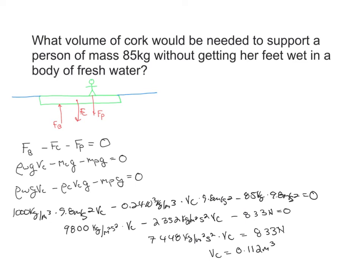In this video, we're going to look at the example: what volume of cork would be needed to support a person of mass 85 kilograms without getting her feet wet in a fresh body of water? We have a situation where a piece of cork is essentially being used as a raft. We have a person standing on it, and we want to know what volume we need so that the water level never gets above the raft — essentially the extreme where the water level is exactly at the top of the raft made out of cork.